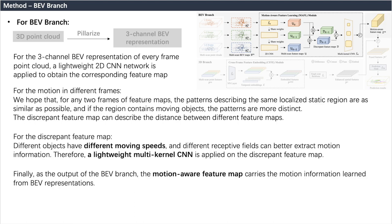For the obtained discrepant feature map, different objects have different moving speeds, and different receptive fields can better extract motion information. Therefore, a lightweight multi-kernel CNN is applied on the discrepant feature map. Finally, as the output of the BEV branch, the motion-aware feature map carries the motion information learned from BEV representations.